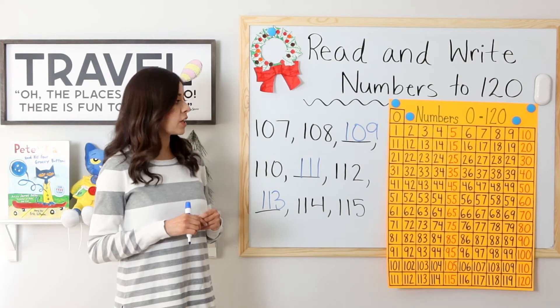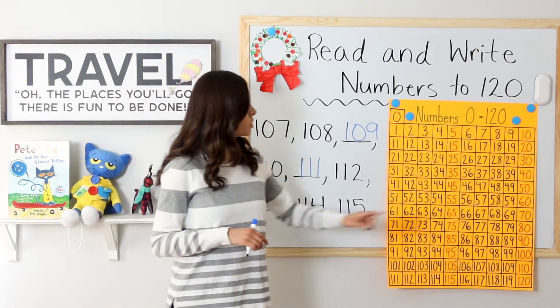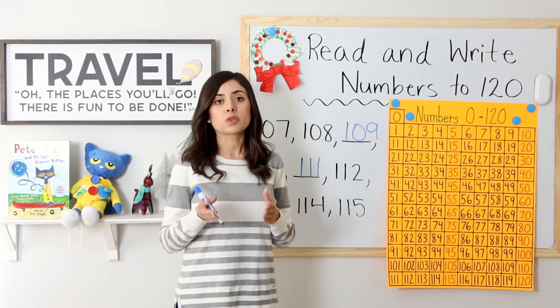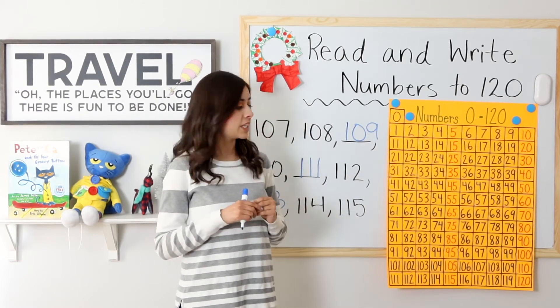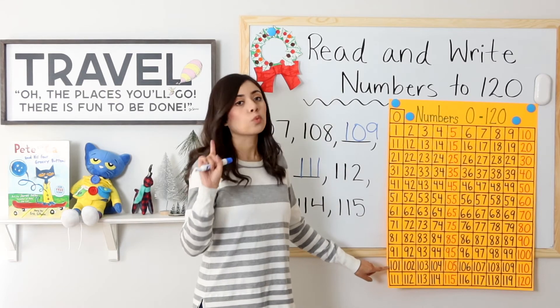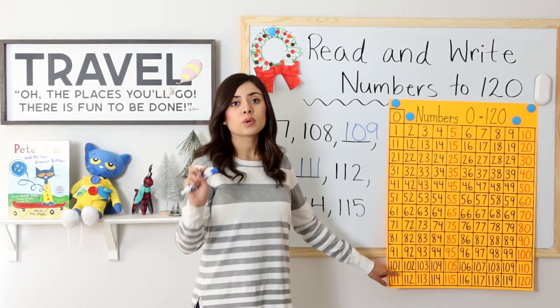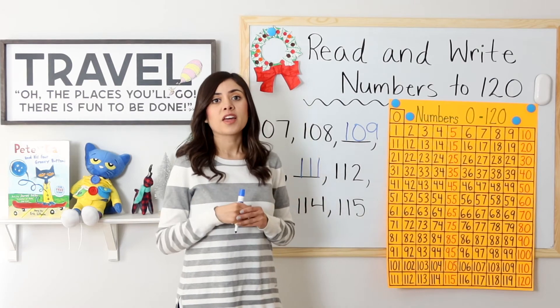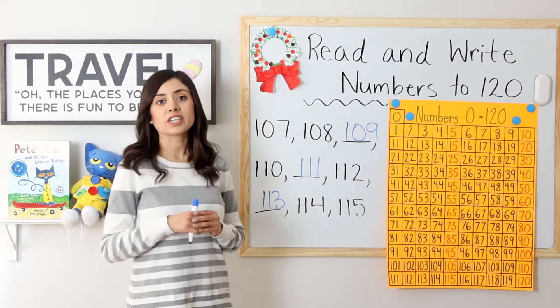Remember as I said in the last video, once you reach 100, you start back at the same order, only with 100 in front of it. See? 100, 101, 102, 103, 104, and so on. That's why this was very easy for me.